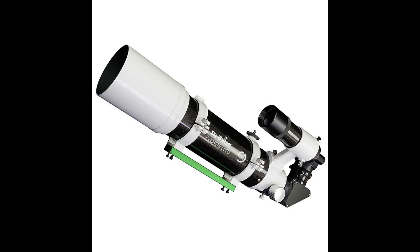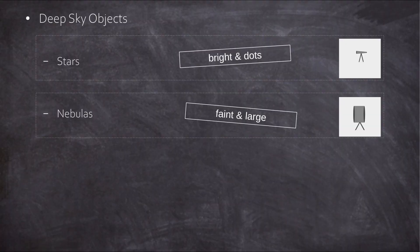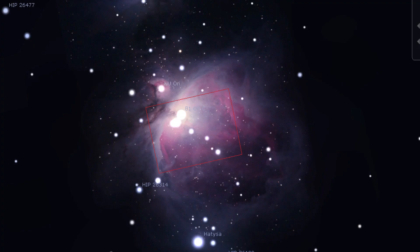Secondly, as we saw, the nebulas appear often very big in the sky, so the best suited scope is a very short one. Otherwise, you will cut off parts of the objects, wide and short.